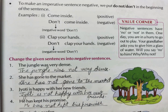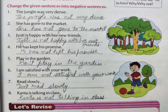Now let us do the exercise. Change the given sentences into negative sentences. 'The jungle was very dense' becomes 'The jungle was not very dense.' 'She has gone to the market' becomes 'She has not gone to the market.' 'Jyoti is happy with her new friends' becomes 'Jyoti is not happy with her new friends.' 'He has kept his promise' becomes 'He has not kept his promise.'